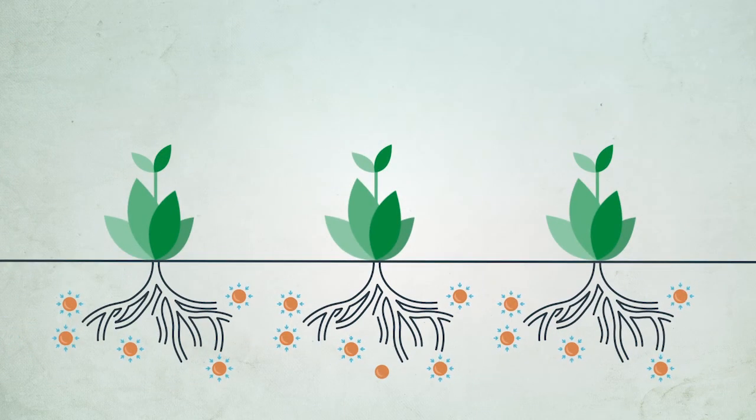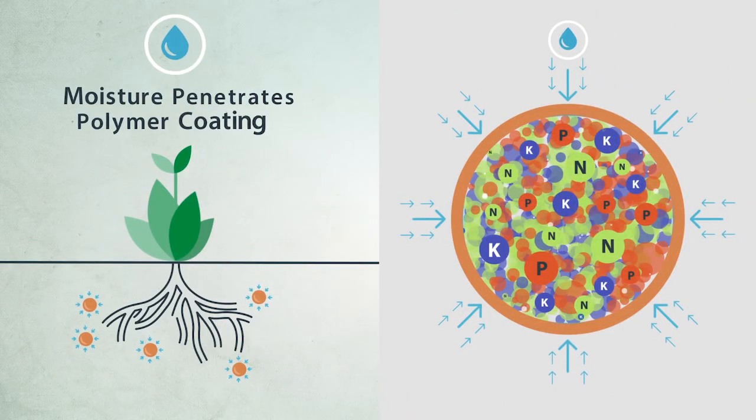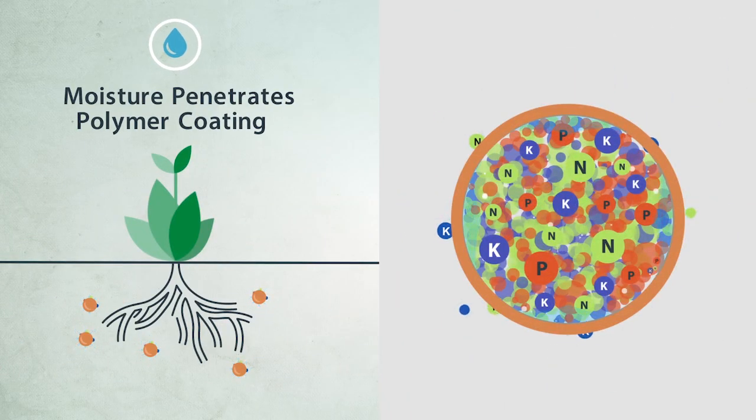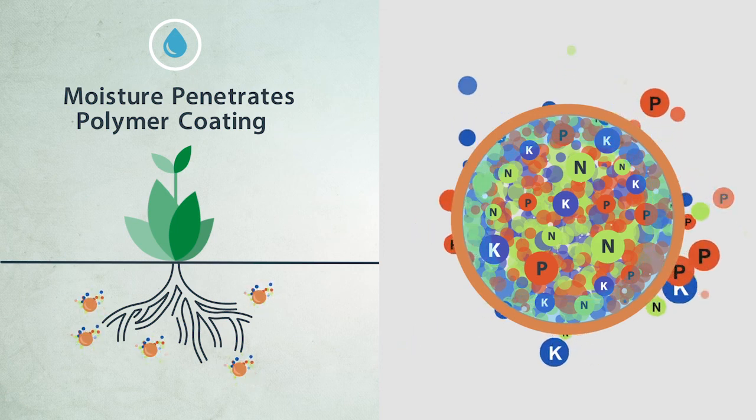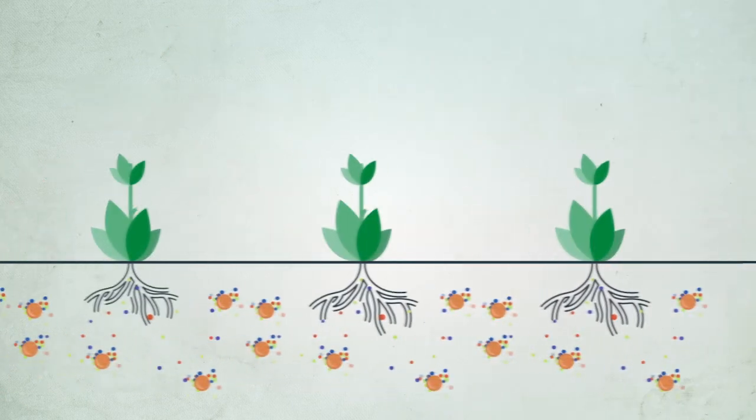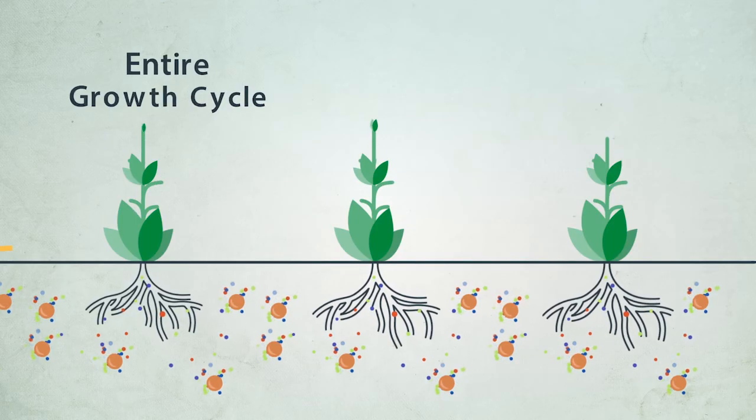In the soil, moisture is slowly absorbed and nutrients begin to dissolve, gradually diffusing directly to the root zone. Crops consume the nutrients according to their needs through the entire growth cycle.